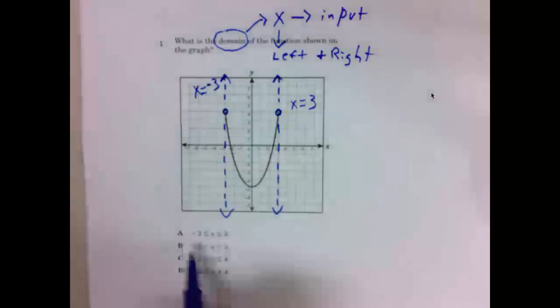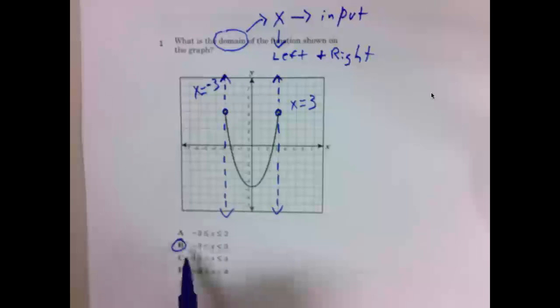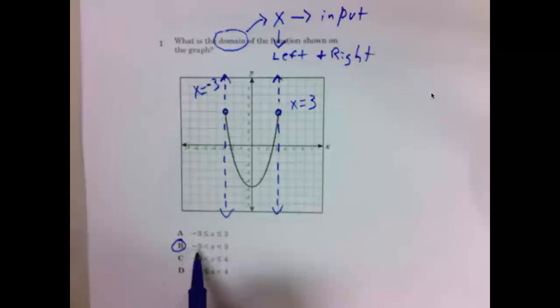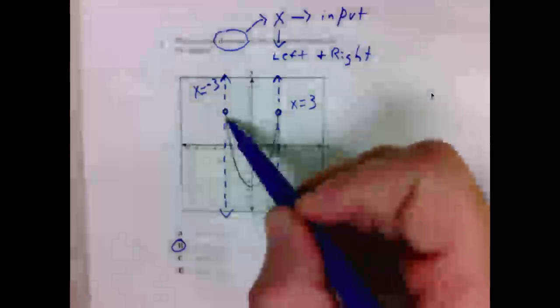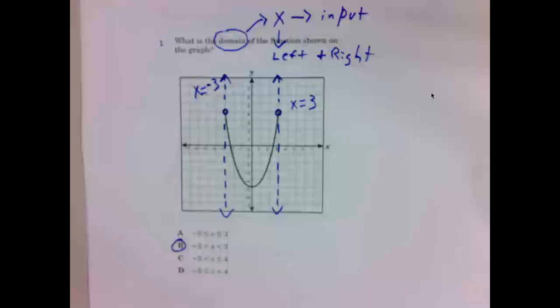Number one, the answer is B. X's can be from negative 3 to positive 3, but no equal to part because of the empty circle. Okay. Pause the video at this time and try the remainder of the problems.